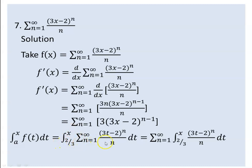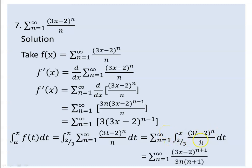The integration of a sum of different functions is the same as the sum of the integrations of each function — the integral of f plus g is the same as the integral of f plus the integral of g. So we integrate term by term. We integrate (3t-2)^n over n dt. We get (3t-2) to the power of n plus one.